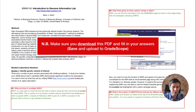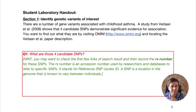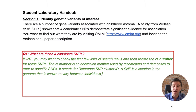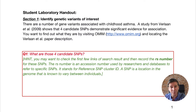In question one of this handout, it says identifying genetic variants of interest. The idea is we're going to go to that database called OMIM. That stands for Online Mendelian Inheritance in Man. It's kind of unfortunately named, as we've discussed.